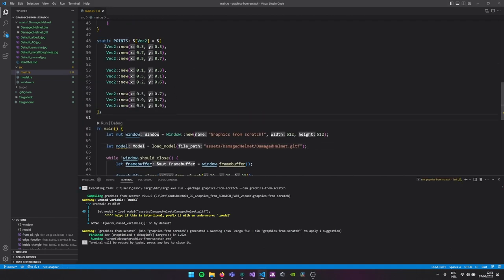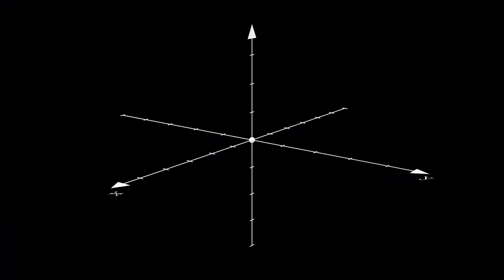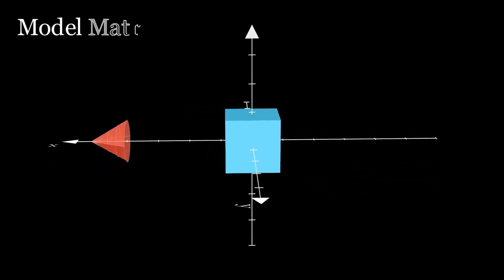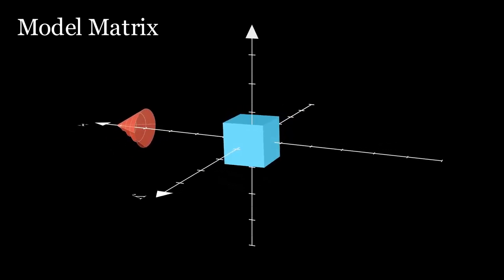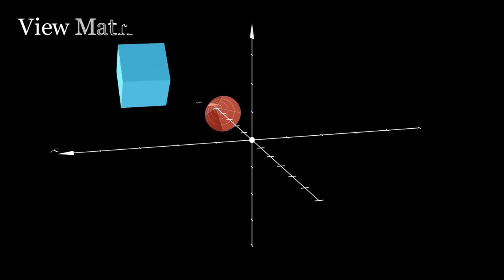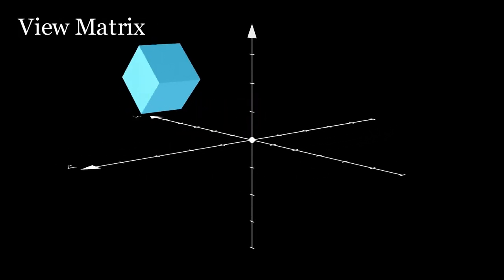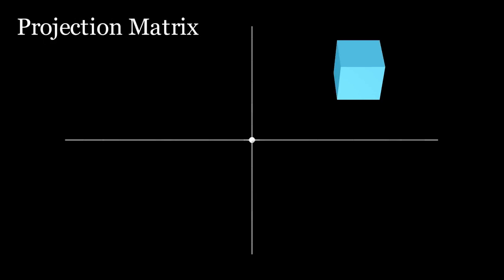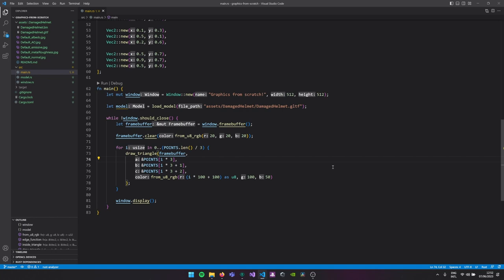Now we have a bunch of points again, but they're in 3D space. How do we map those 3D points into 2D space? In order to get them from 3D to 2D we can apply three matrices. We have a cube as our model and a cone as our camera. First we apply the model matrix, which will translate, scale, and rotate our model from model space to world space. After that we apply the view matrix to transform from world space to camera space. Finally we apply the projection matrix to create depth.